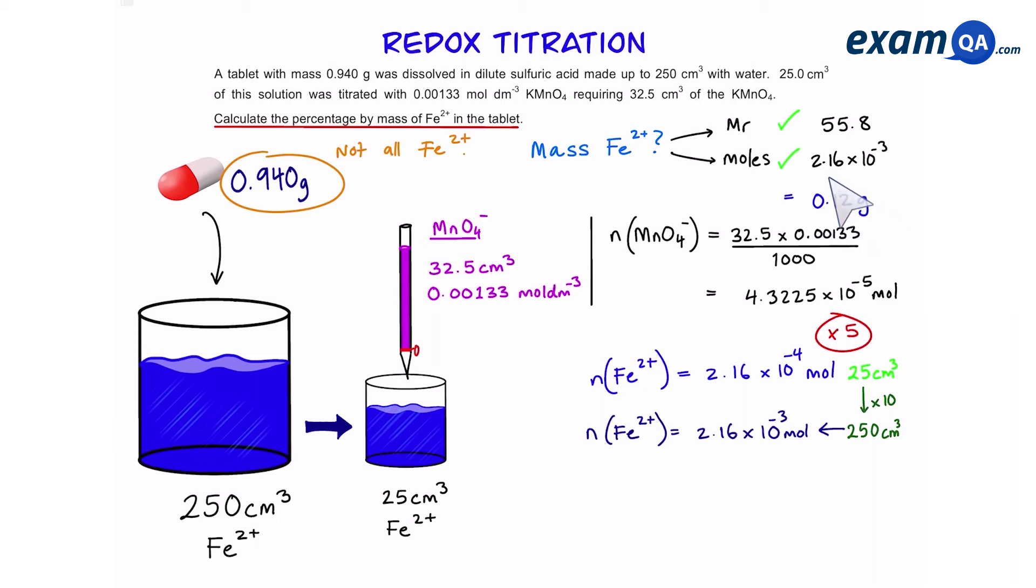So, we know that actually, that 0.94 gram tablet only contained 0.12 grams of iron. Now, what the question wants from us is to work out the percentage purity or percentage by mass.